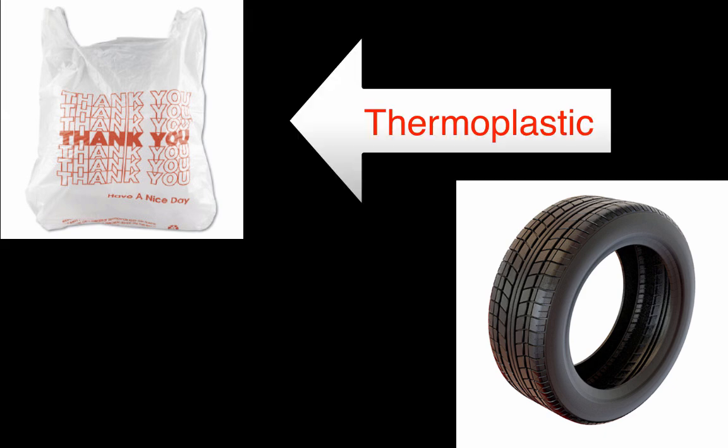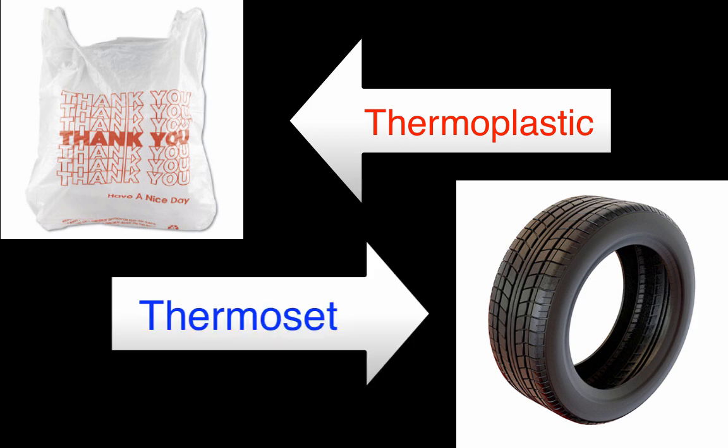Now that we've gone over the differences between thermosets and thermoplastics, it's time for a quiz. Would a plastic bag be considered a thermoset or a thermoplastic? How about a car tire? Plastic bags melt when heated, and can be recycled, so they are thermoplastics. Car tires are heat-resistant and can't be melted. They are thermosets.